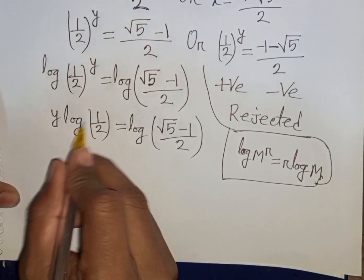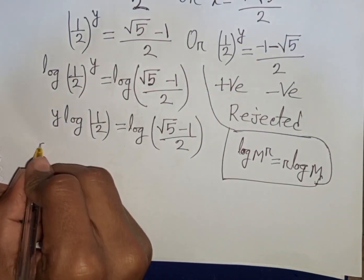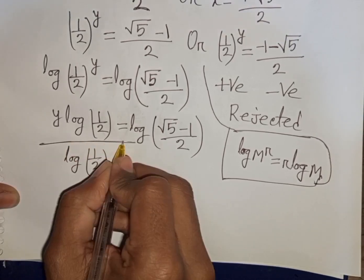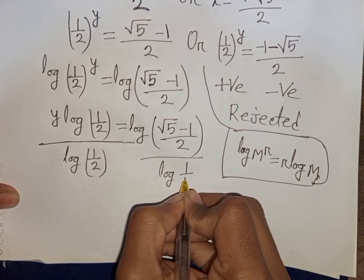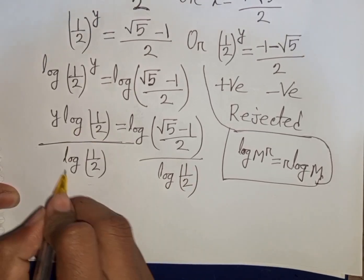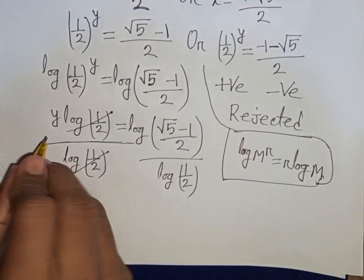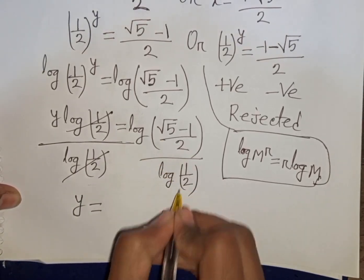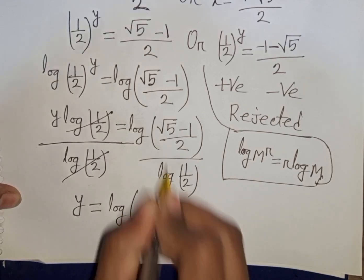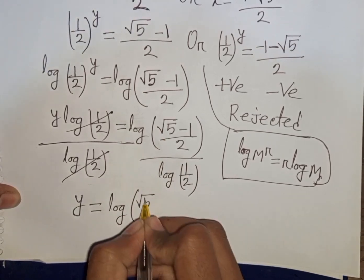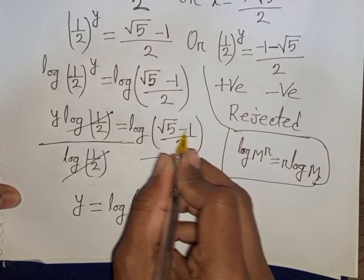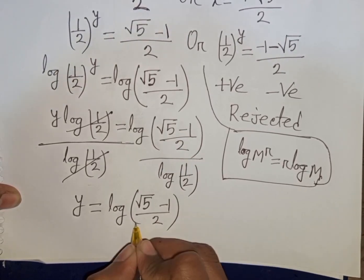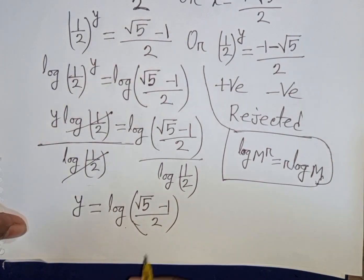We need the value of y, so divide both sides by log(1 over 2). The log(1 over 2) terms cancel, giving y equals log of (square root of 5 minus 1) over 2, with base 1 over 2.